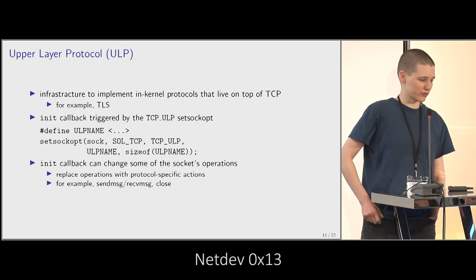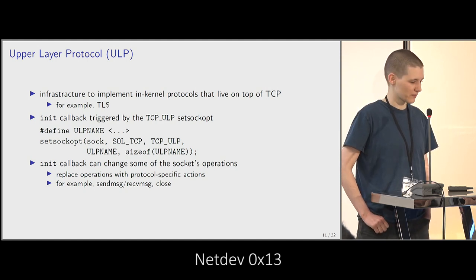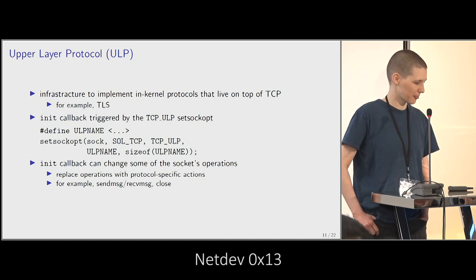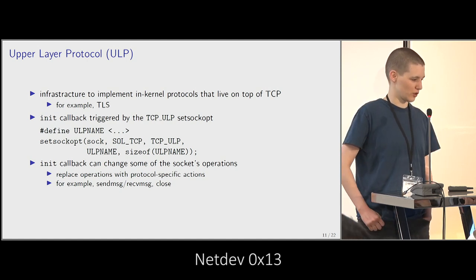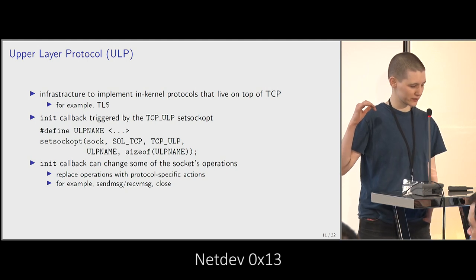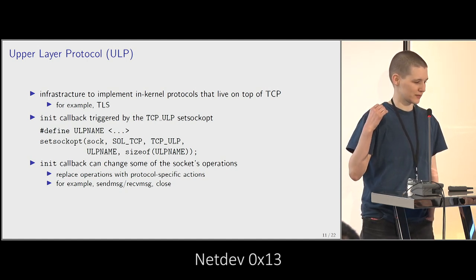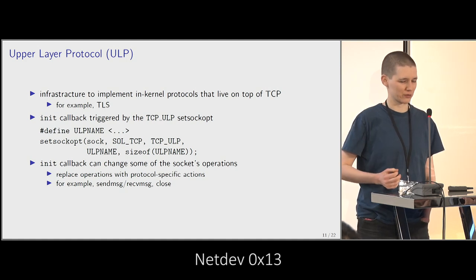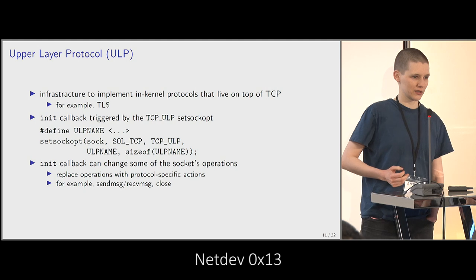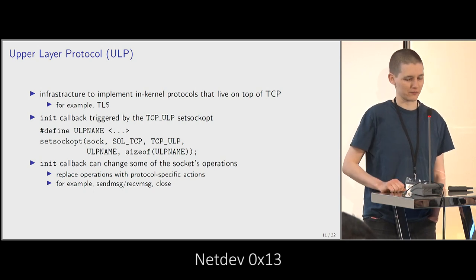Then we have the Upper Layer Protocol infrastructure — TCP ULP — used to implement internal protocols on top of TCP. For example, that's what the KTLS implementation uses — we have a data path for TLS in the kernel implemented using ULP. What ULP does is let the userspace application call the TCP ULP setsockopt, which triggers an init callback inside the kernel. That can be used by the protocol's internal implementation to replace some of the socket operations with whatever extensions are needed — adding headers, encrypting, and so on.